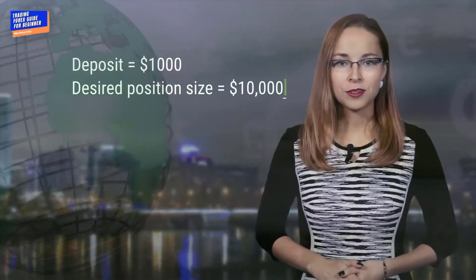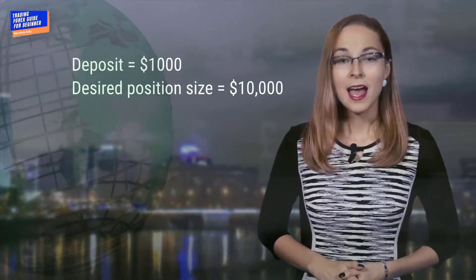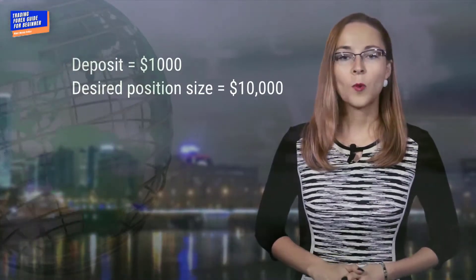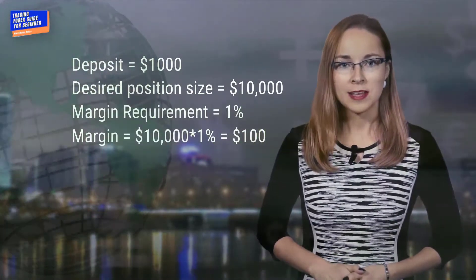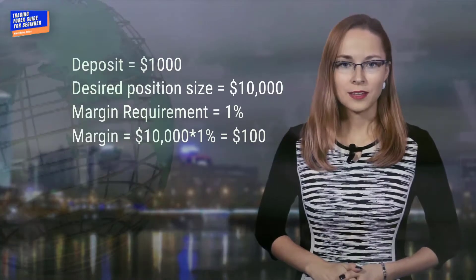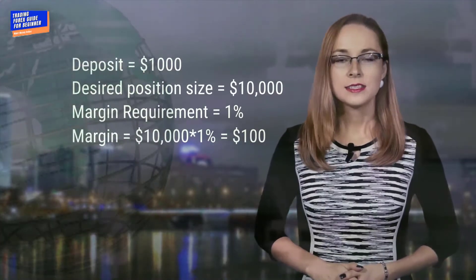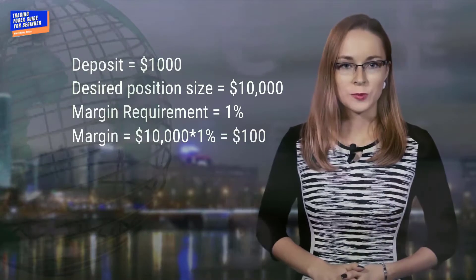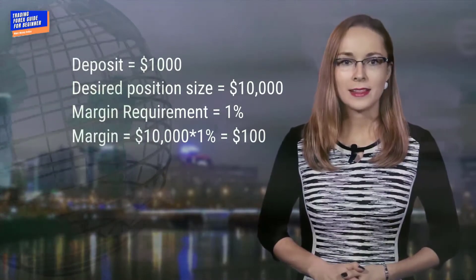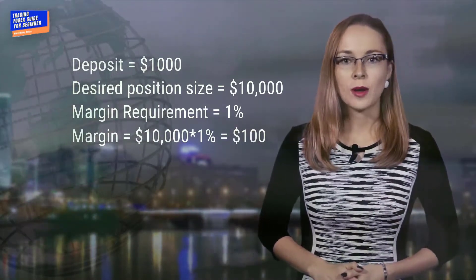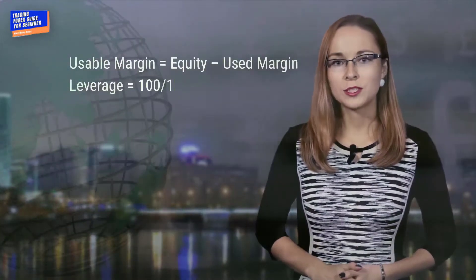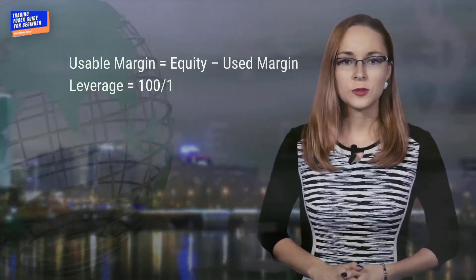Let's see how it works on an example. You have $1,000 on deposit and want to trade $10,000. In this case, 1% margin equal to $100 will be set aside from your account. This is your used margin. In your terminal trade window, you can see columns: balance, equity, and usable margin. Your usable margin will always equal equity less used margin.